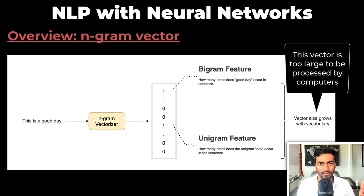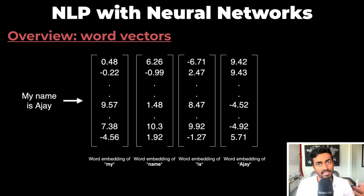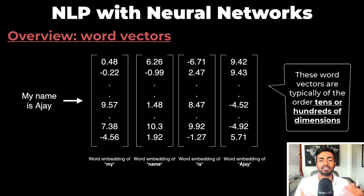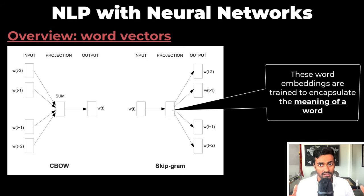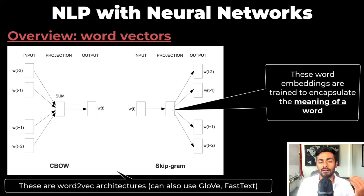But here we run into a problem. These vectors are too large to be processed by computers in mass. So instead of representing a sentence as a vector, we can represent words as fixed-size vectors. These word vectors are typically of the order of tens or hundreds of dimensions, instead of the thousands of dimensions that we see with n-gram vectors. These word vectors, or word embeddings, can be trained to encapsulate the meaning of a word using architectures like word2vec, GloVe (which is global vectors), and fastText.